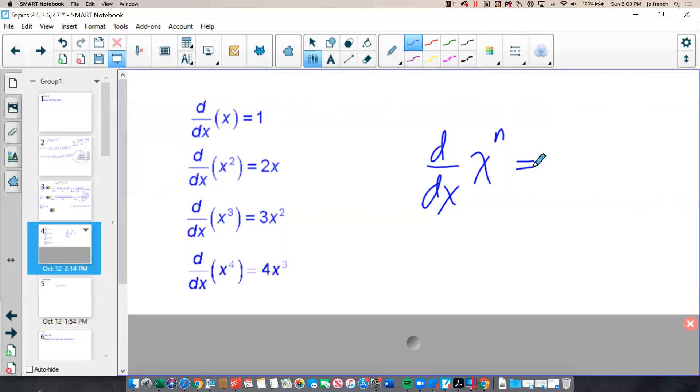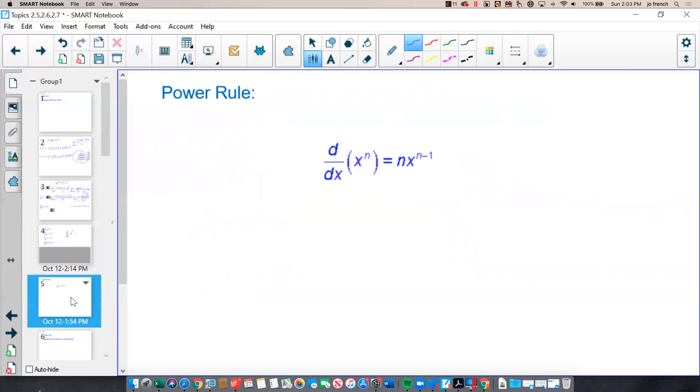Okay. Hopefully, you've taken some time to try to determine the pattern, wrote it down, and now we can check. Here it is. The derivative of x to the n with respect to x is n times x to the n minus 1. So we take our exponent, n, we bring it down in front of our x and lower our exponent by 1.